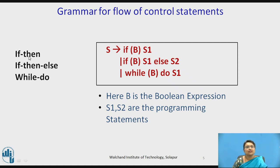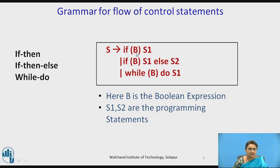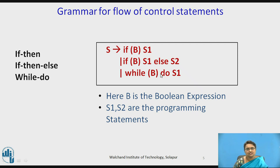We are considering the grammar for three types of statements: a simple if-then statement, an if-then-else statement, and a while-do statement. In the grammar, S represents a statement. The first production is: if boolean expression B is true, then S1 executes. The second is: if B is true then S1 executes, else S2 executes. The third is: while B is true, S1 repeats — the loop continues until B is false, at which point execution exits the loop.